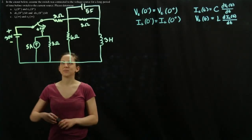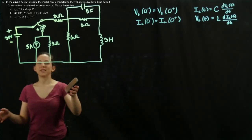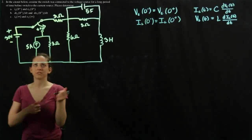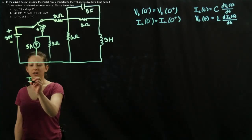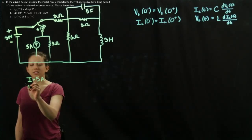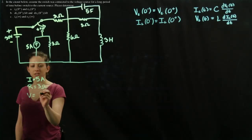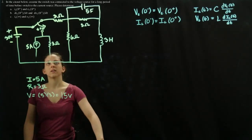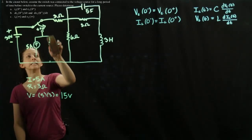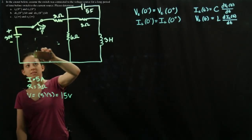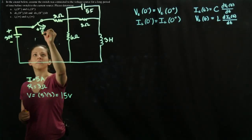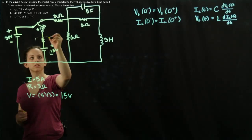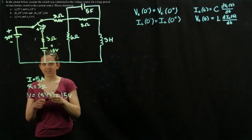This is our circuit and what we want to do is source transform this current source into a voltage source. We know that the current is 5 amps and the resistance is 3 ohms, so the voltage is going to be 5 times 3, which is 15 volts. When we redraw this, that is our redrawn circuit.